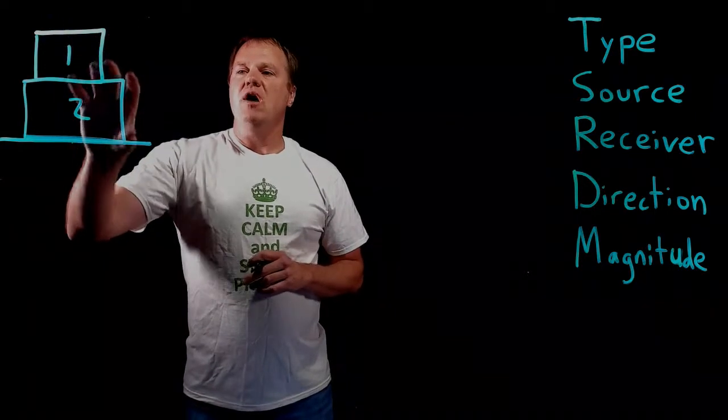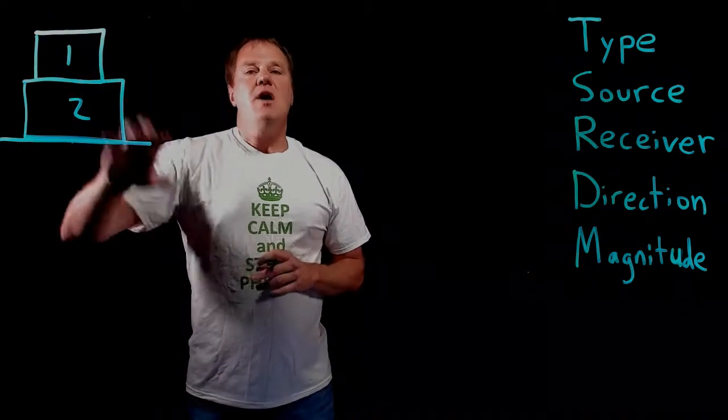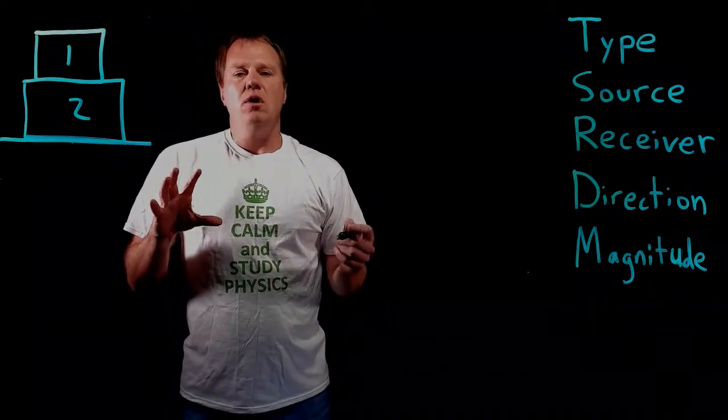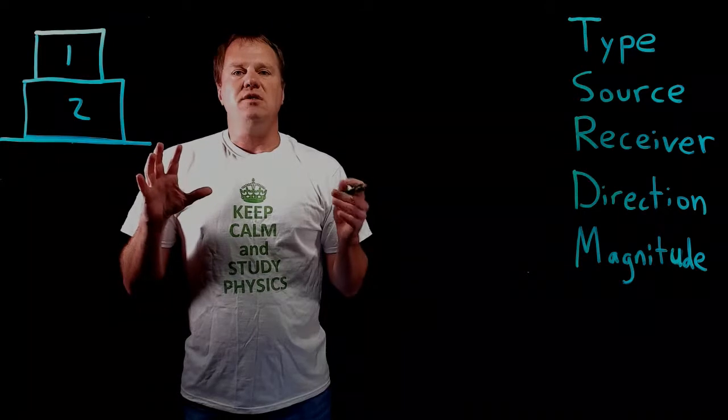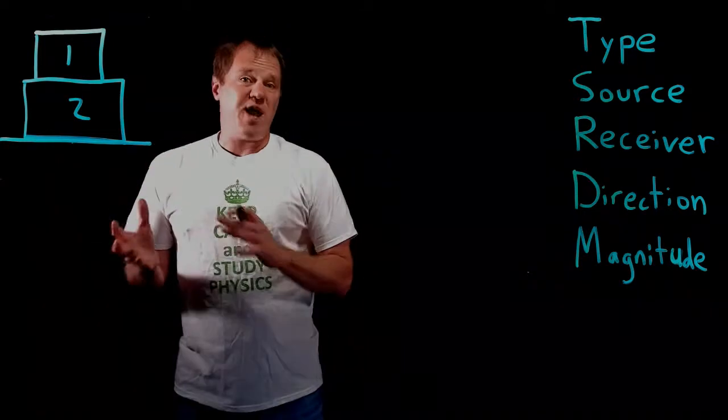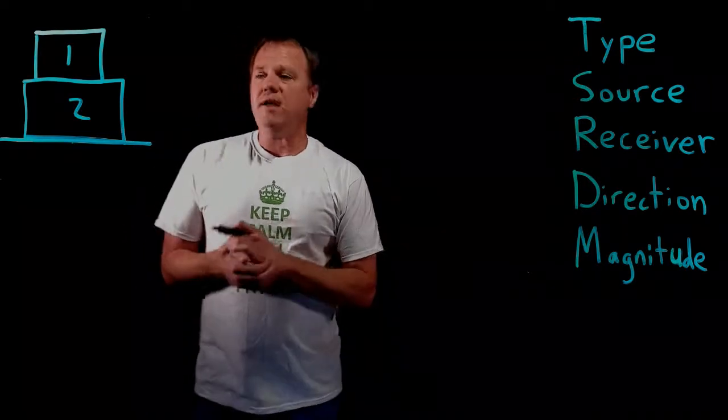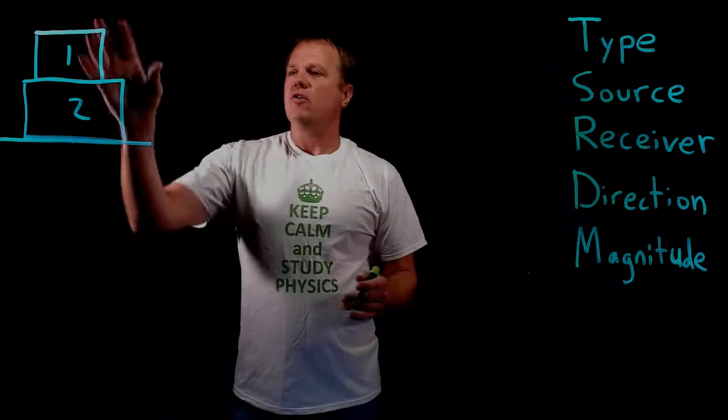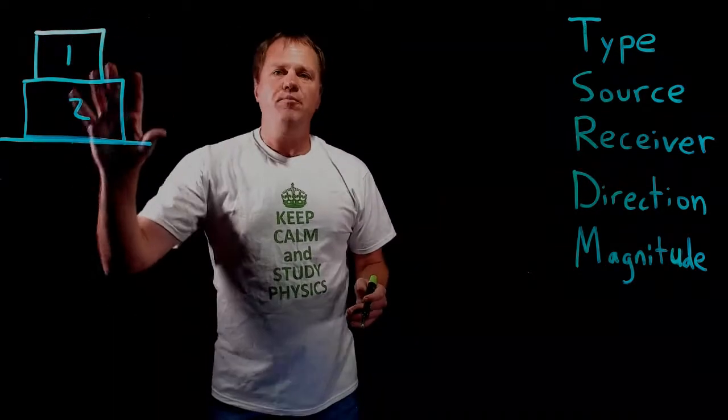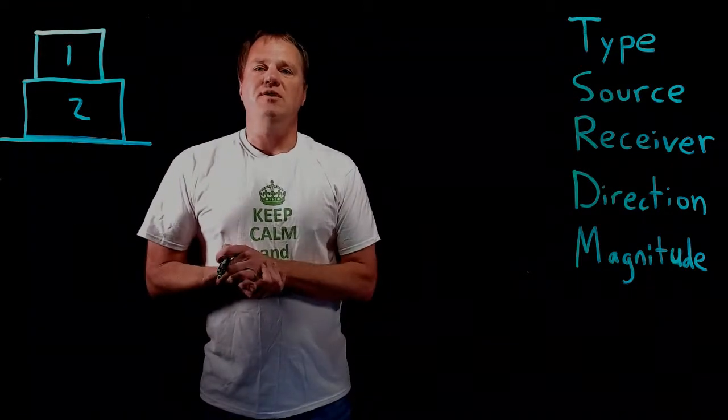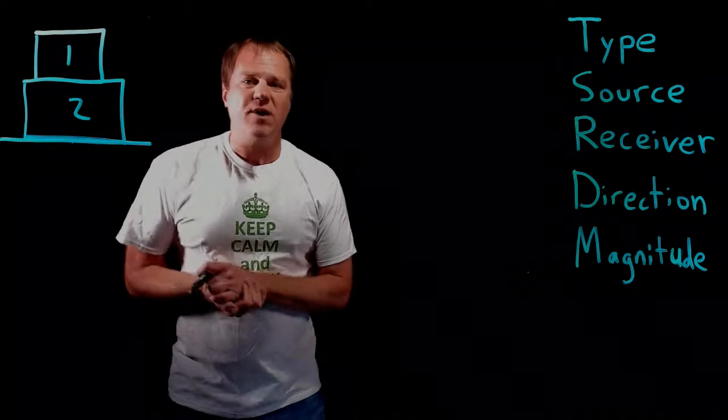A free body diagram for block one, a free body diagram for block two, and the important lesson here is how to show the existence of an action-reaction pair or an application of Newton's third law. So if you'd like, go ahead and pause the video, draw a free body diagram for block one, a free body diagram for block two, and use appropriate notation to show the existence of one or more action-reaction pairs.